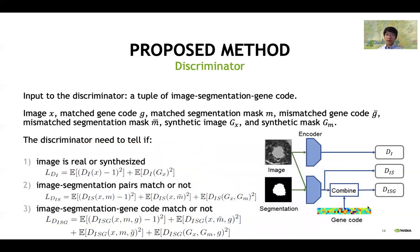The challenge of correlation between gene code and the image is addressed by the discriminator. The input of the discriminator is the tuple of image, segmentation mask, and gene code itself. Several losses can be incorporated depending on the variations of the inputs. Potential variations include real images, unmatched gene code, and unmatched segmentation mask, and they are discriminated against cases containing synthetic image, synthetic mask, as well as mismatched gene code and mismatched segmentation mask. In this way, during GAN training, the network will gradually learn the correspondence between gene code and the image appearance, specific to the lesion region guided by the mask output.